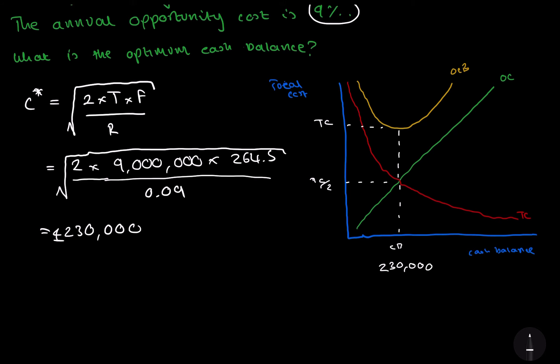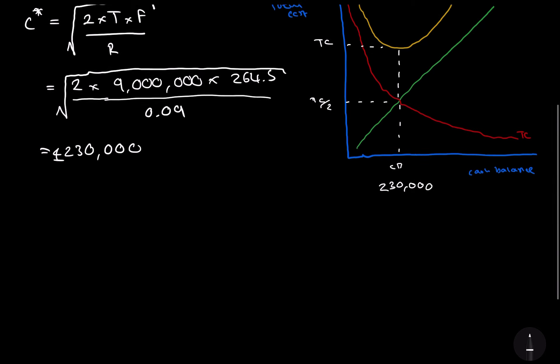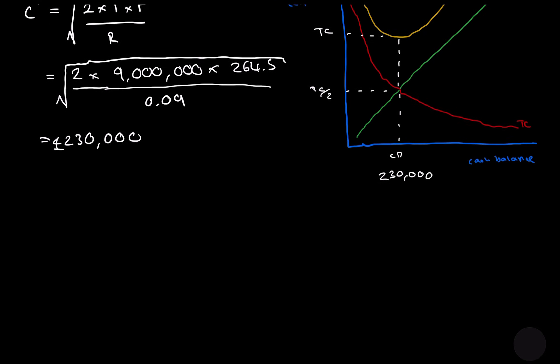And if we wanted to work out the cost, let's work out our opportunity cost first. Our opportunity cost is calculated by the cash balance needed over 2 times our interest rate, which is our opportunity cost. Our total cash was 9 million all over 2. That's 4.5 million times 0.09.